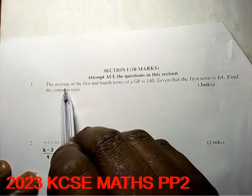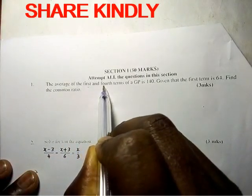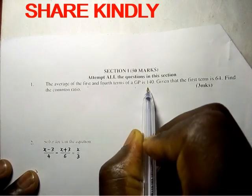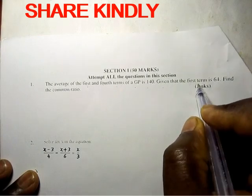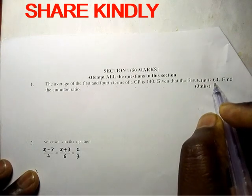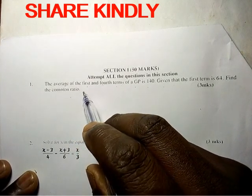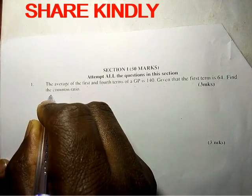The average of the first and the fourth terms of a GP is 140, given that the first term is 64. Find the common ratio. So the first term of a GP, the first term, is...